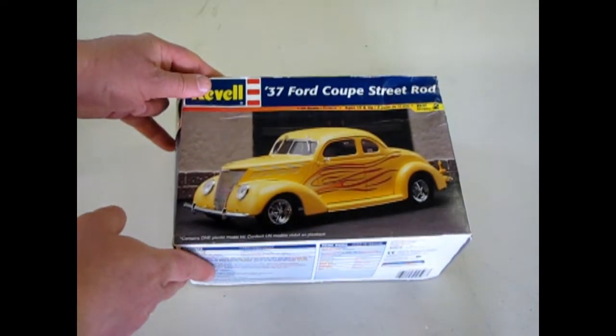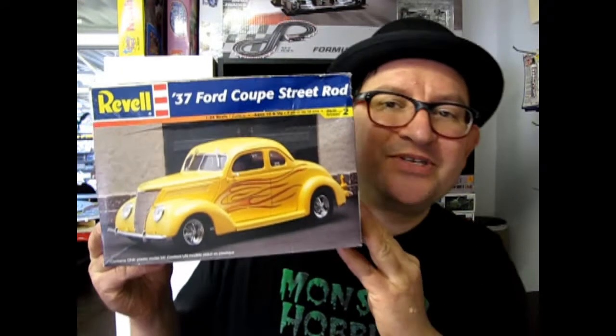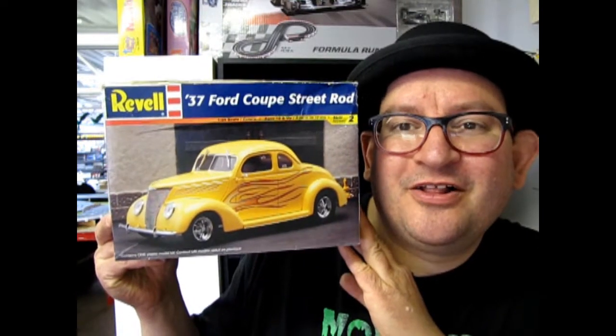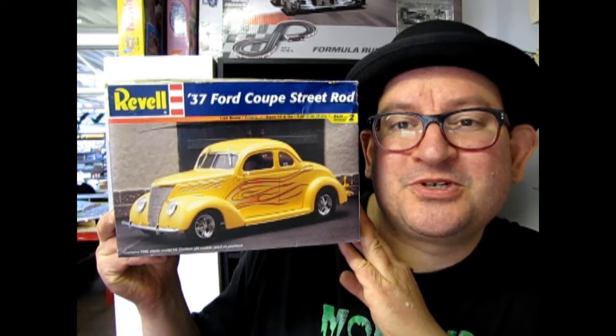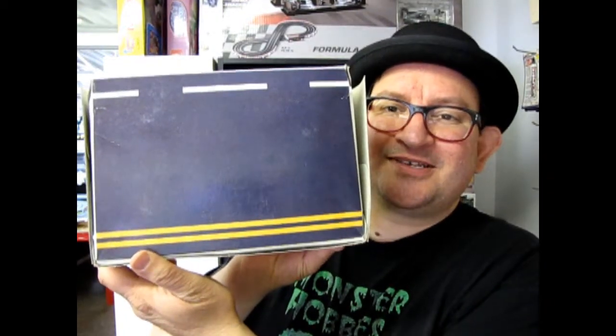Of the 37 Ford Coupe by Revell. Well we hope you enjoyed that episode of Monster Hobbies What's in the Box where we looked at the Revell 37 Ford Coupe Street Rod Kit. And if you actually turn it over, you can hit the streets with your street rod. But seriously folks.